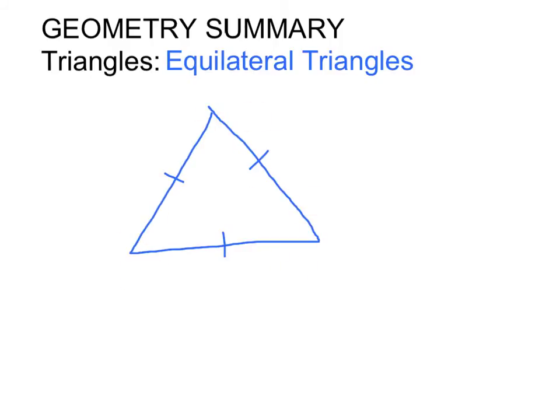Equilaterals have three equal sides and three equal angles. Each of these angles must be 60 degrees, which equals 180 degrees.